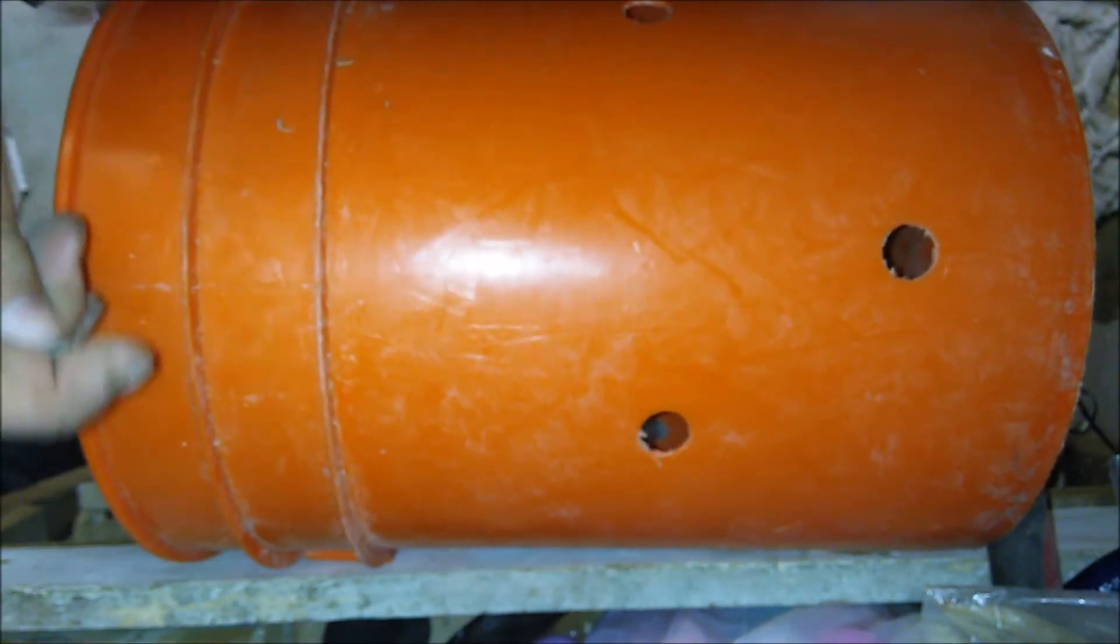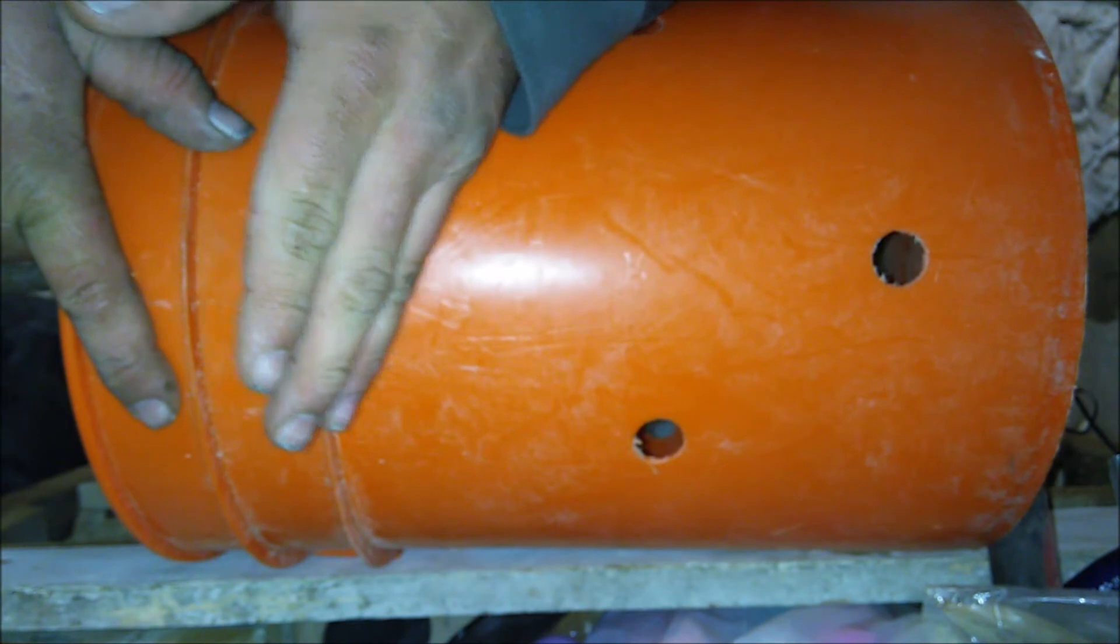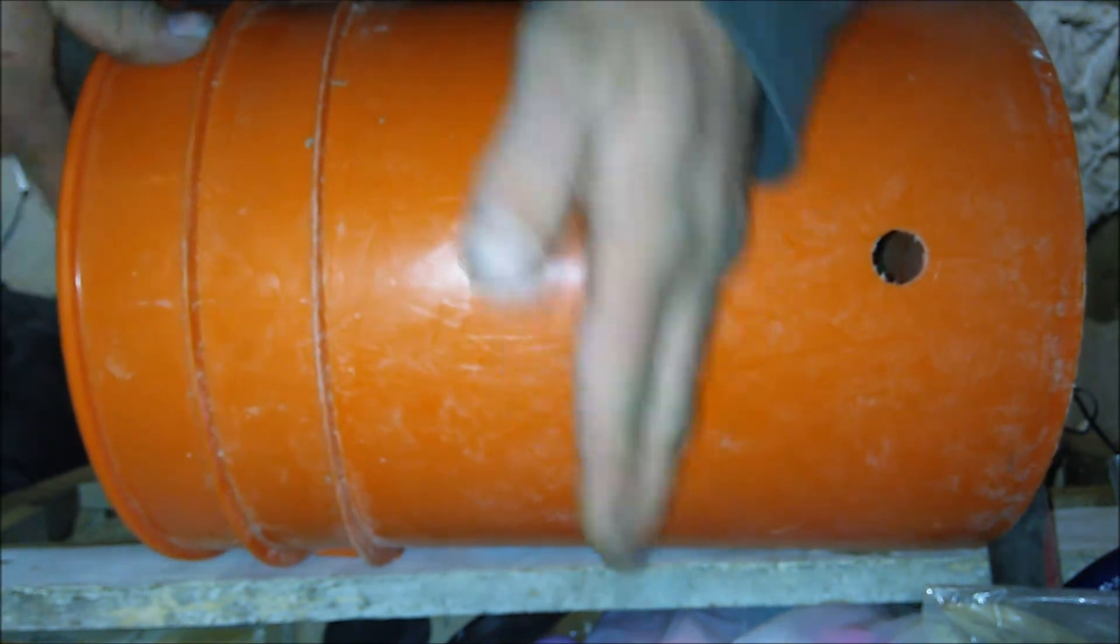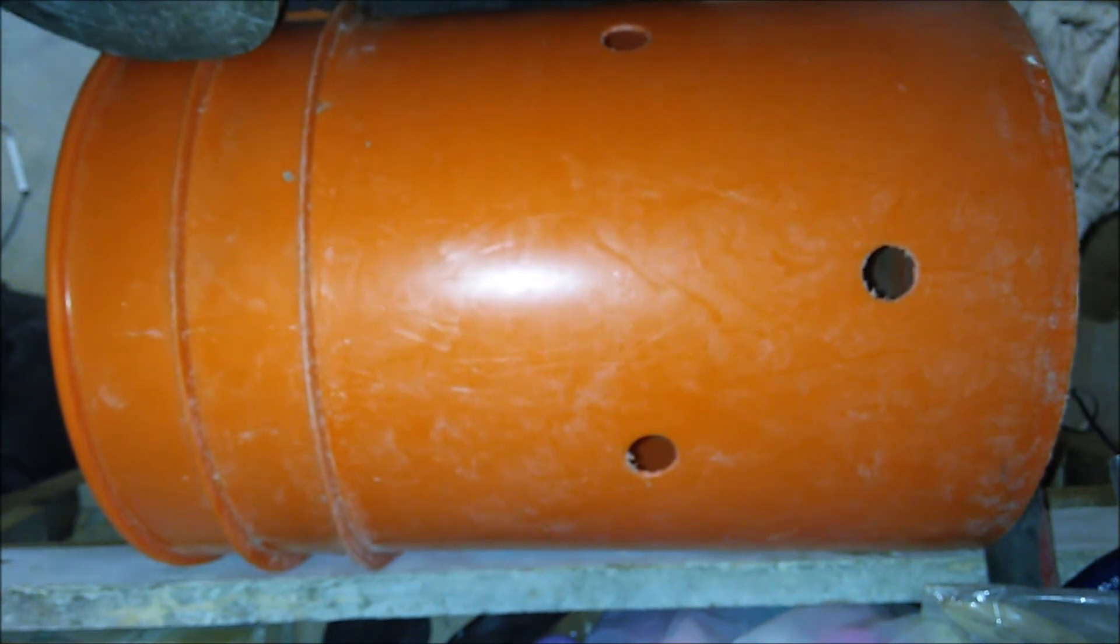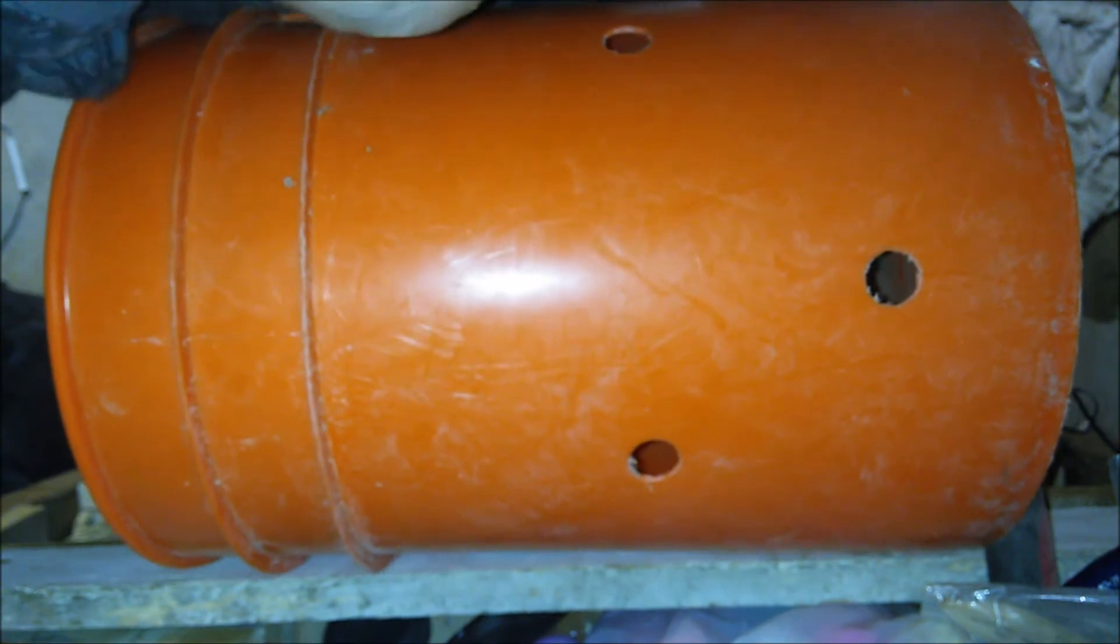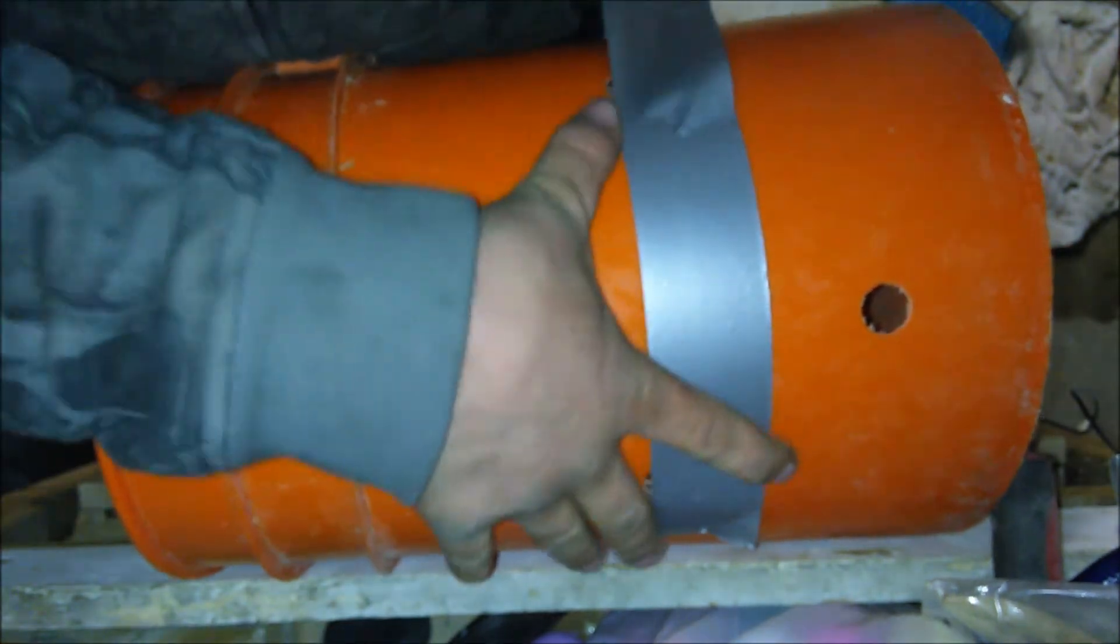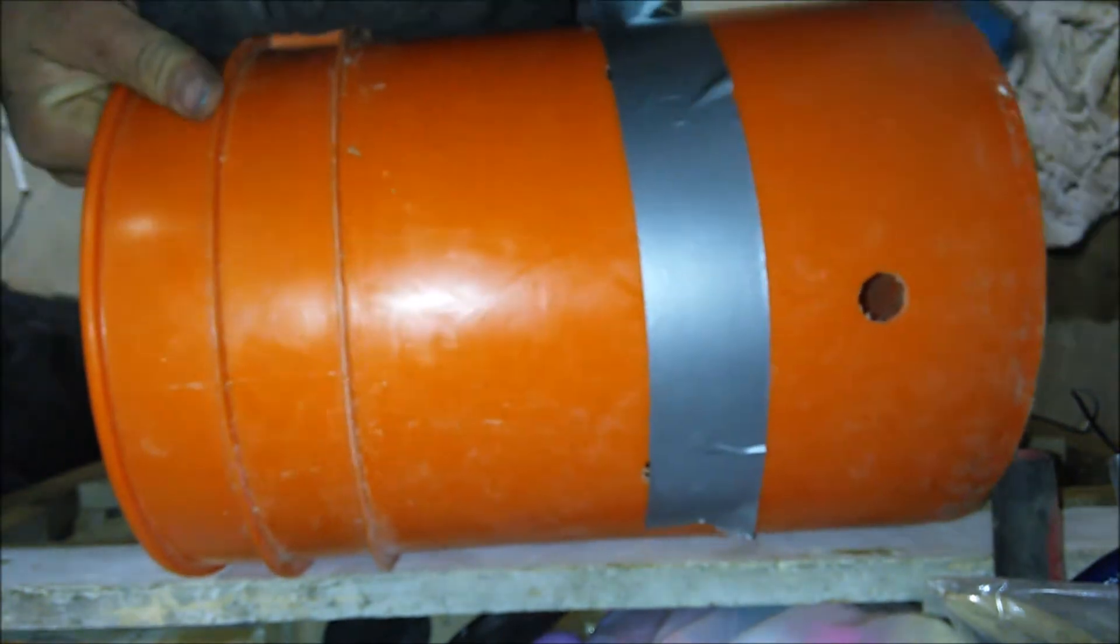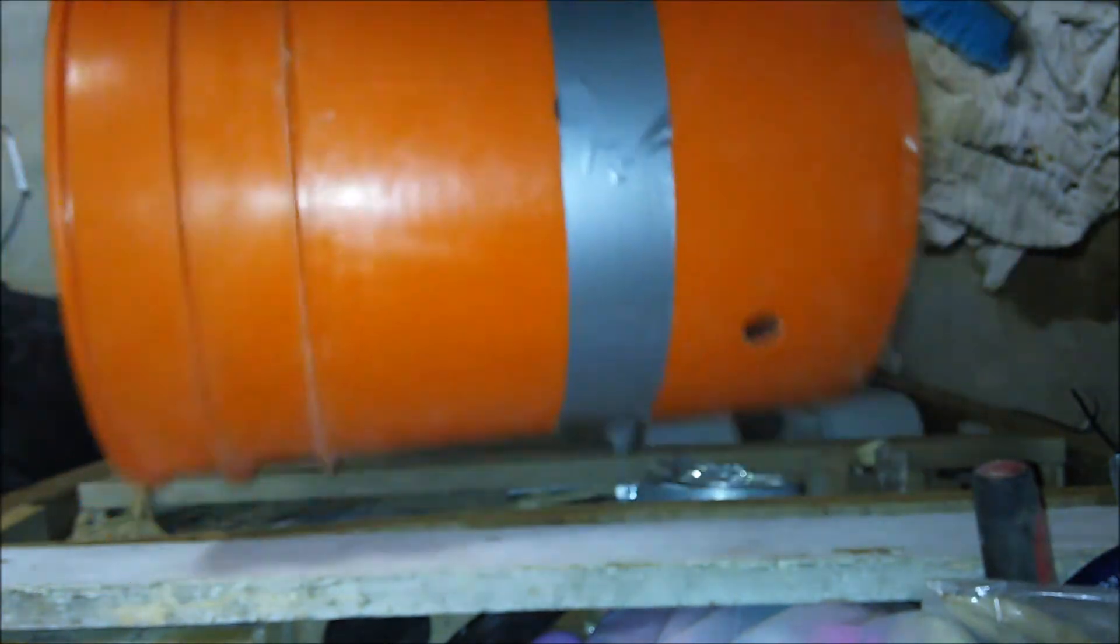Then what we're gonna do is take our next bucket, and this length right here is gonna determine the depth of our classifier. I like to use a half a bucket. That way I'm not moving a whole bunch of material at once because it's a little hard when you get too much material in there. So I'm just gonna mark that off, go around the bucket here. Alright, now we got that. We'll cut these buckets and I'll be back.